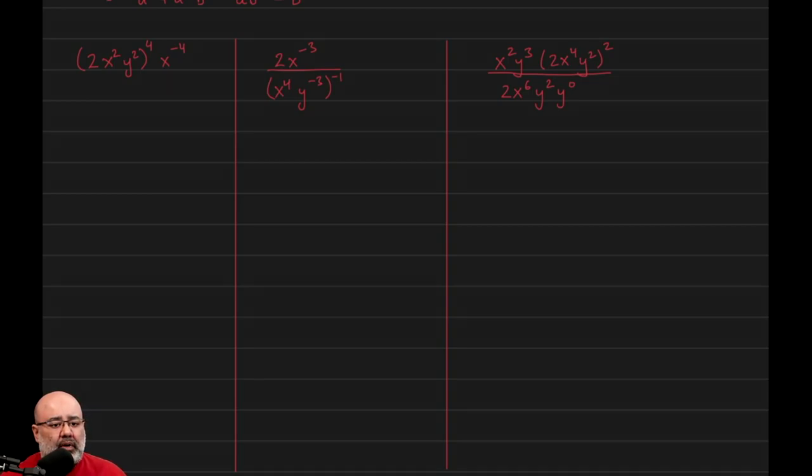So the first one is 2x squared, y squared, all raised to the fourth times x to the negative 4. So I'm only going to use one property at a time to model what I hope you guys are doing, which is just one property at a moment.